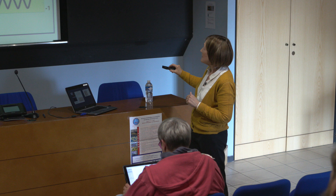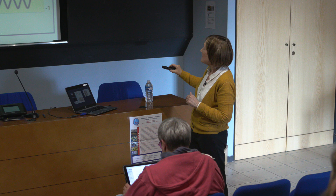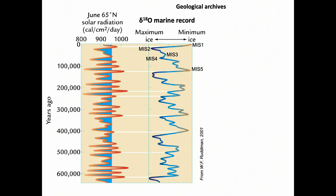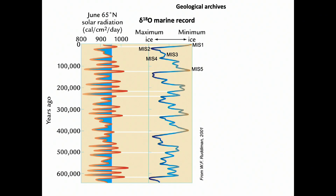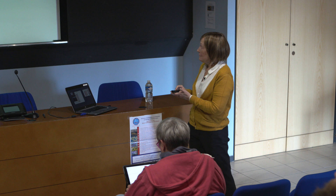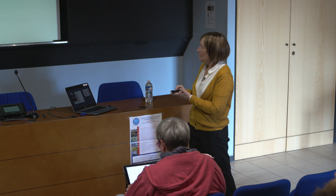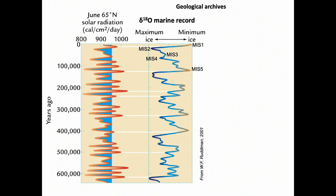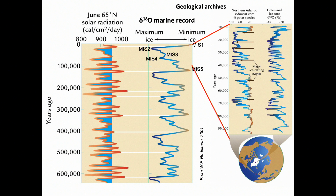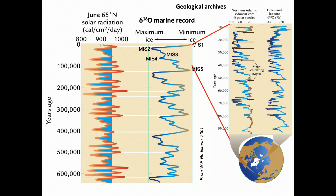The combination of these three orbital parameters gives this curve of changes in insolation, and as I told you before, these drive changes in global ice volume between glacial and interglacial periods. But recently, in the 1980s, it was discovered that there is also millennial-scale climatic variability — rapid climatic variability.